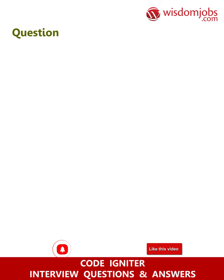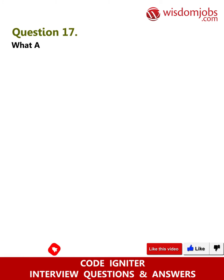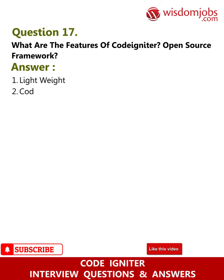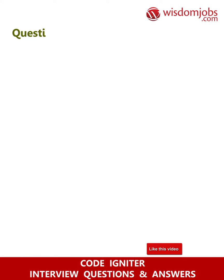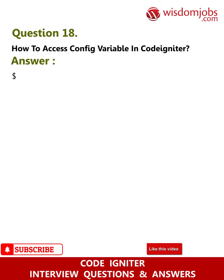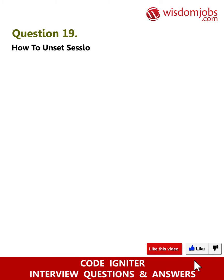Question 16: In which language is CodeIgniter written? Answer: PHP. Question 17: What are the features of CodeIgniter open source framework? Answer: One — lightweight. Two — CodeIgniter is extensible. Three — full-featured database classes. Question 18: How to access a config variable in CodeIgniter? Answer: $this->config->item('variable_name').